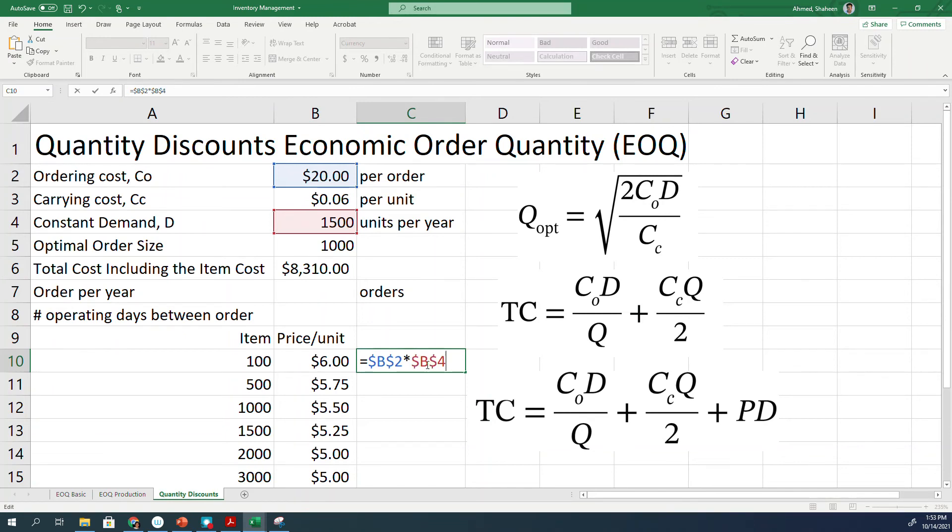I will select this in this case for Q. I'm trying to see what would be the cheapest order size in this case. Again, CC - I will freeze that - times Q, which is this one. I'm not going to freeze that. Divide by 2 plus price per unit times the demand.